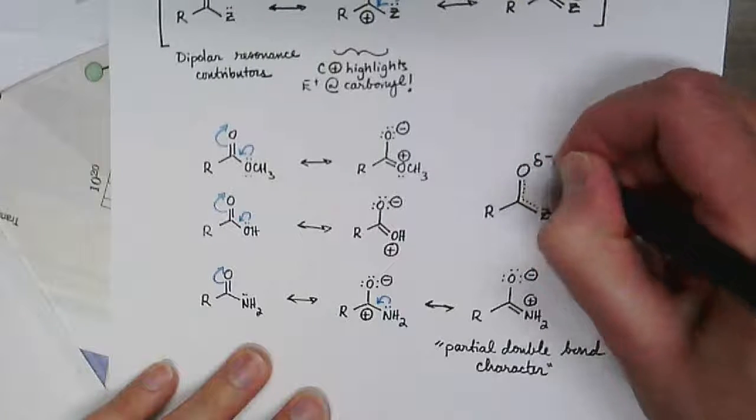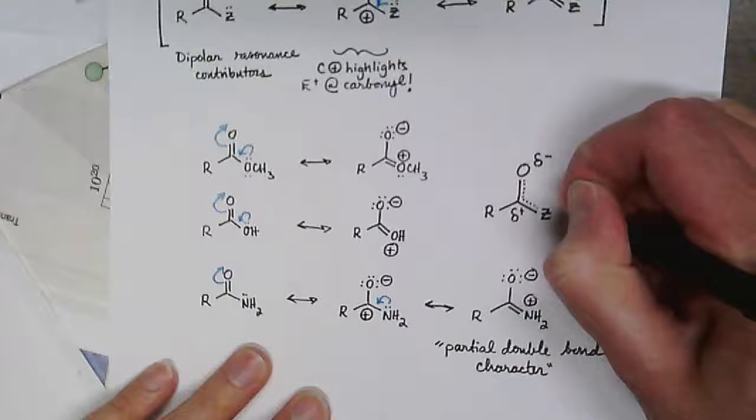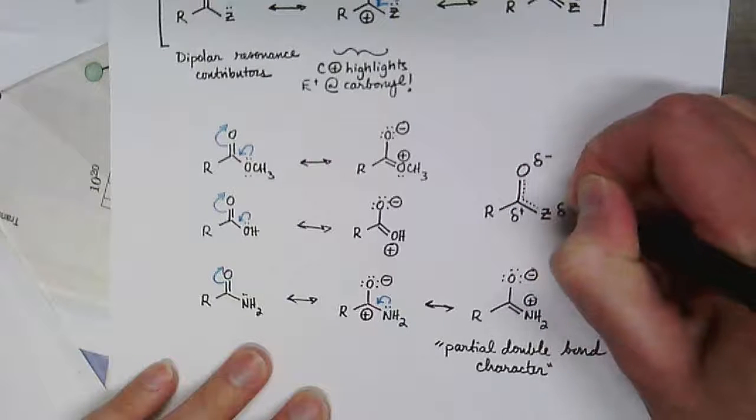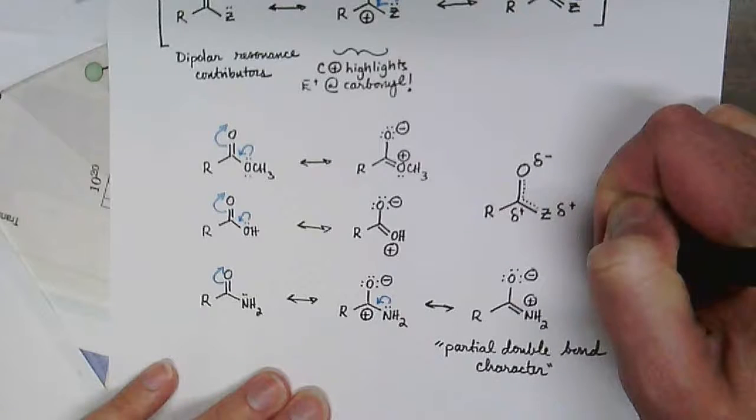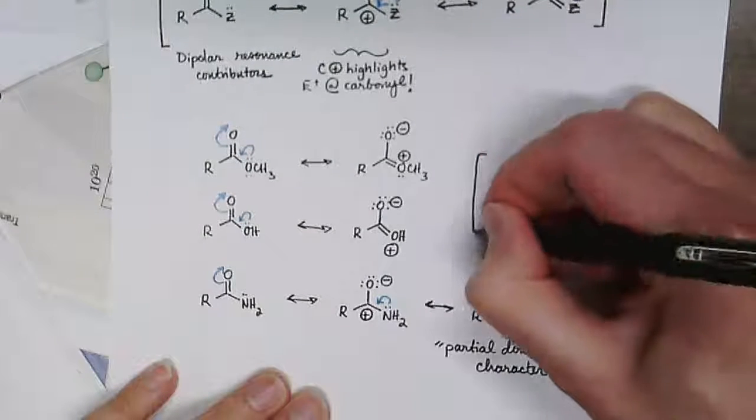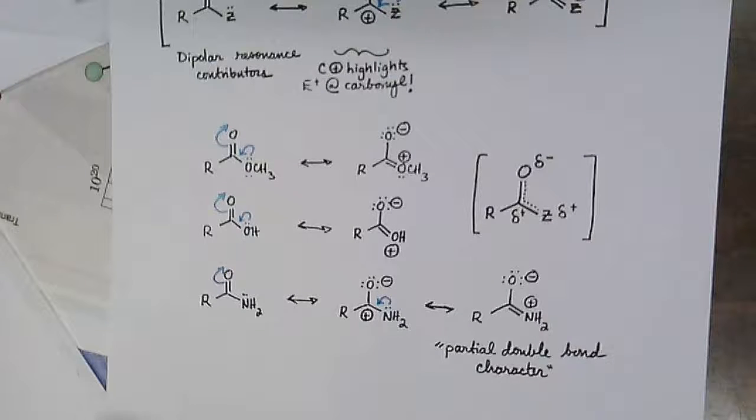And so we can place a delta negative here, a delta positive at the carbonyl carbon, and a delta positive at the Z group. Overall this unit is net neutral, but here we could describe the resonance hybrid of all three resonance contributors.